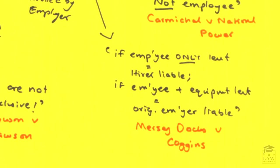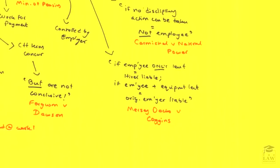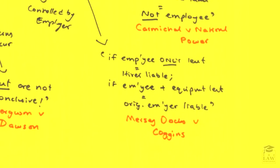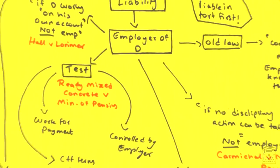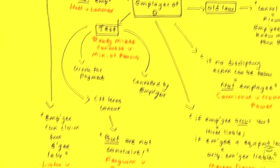Another interesting principle — pun intended — can be seen in Mersey Docks and Coggins. All of these cases are available in your case summaries. What Mersey Docks stated, very briefly, was: if only the employee was lent, then the hirer would be liable and not the original employer. However, if the employee was lent along with equipment, that suggests more liability and responsibility, meaning the original employer would be liable. The bottom line is that it must be determined whether the person who committed the tort is an employee or not, establishing liability in relation to the employer. As seen in Lister and Romford, the employer can later claim from the employee for whatever damages accrued due to the tort.